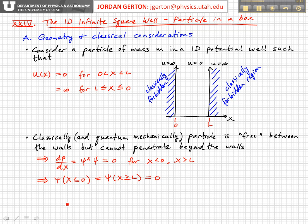Classically and quantum mechanically, the particle is free between the two walls because the potential energy is zero there, but it can't penetrate the walls. This means that if we look at the probability density that we discussed in the last lecture,